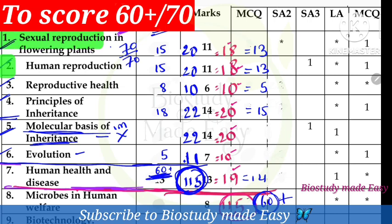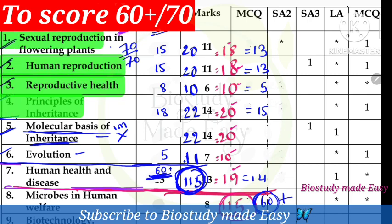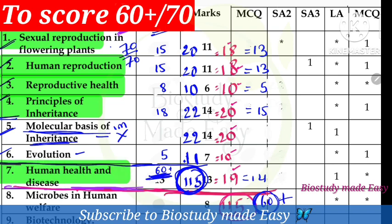The chapters you need to focus on for 60 plus marks are: sexual reproduction in flowering plants, human reproduction, reproductive health, principles of inheritance, and human health and diseases. Study these chapters carefully, and you can score 60 plus or even 65.